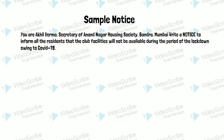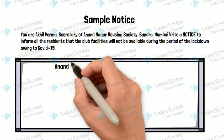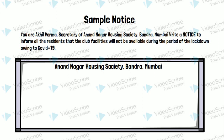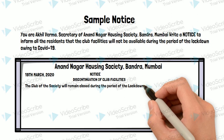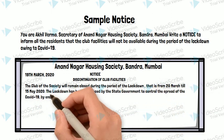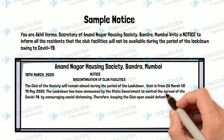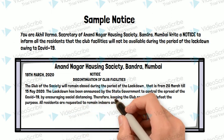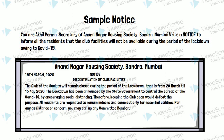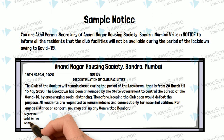We draw the box first. We mention the heading — Anand Nagar Housing Society, Bandra, Mumbai. We write NOTICE. The date is mentioned on the left-hand side, then the subheading. We then go on to write the body and content of the notice. Finally, on the left-hand side, we write the signature — Akhil Verma, the name given — and the designation: Secretary.